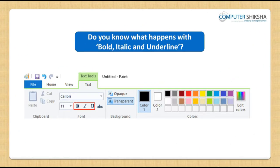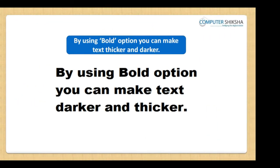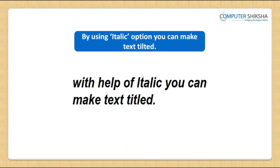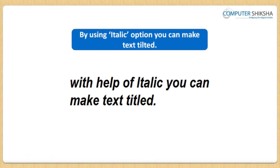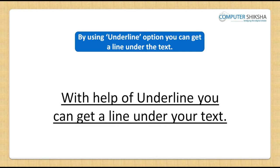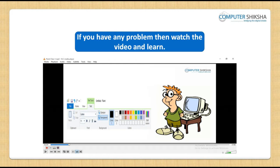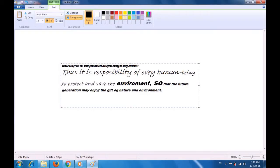Do you know what happens with the options for bold, italic, and underline? By using bold, you can make your text thicker and darker. With italic, you can make your text tilted or slanted. With underline, you can get a line under the text. Now, all of you practice the use of all three options — bold, italic, and underline. If you face a problem in any of these, watch the video. Let us watch this video and practice the use of bold, italic, and underline.